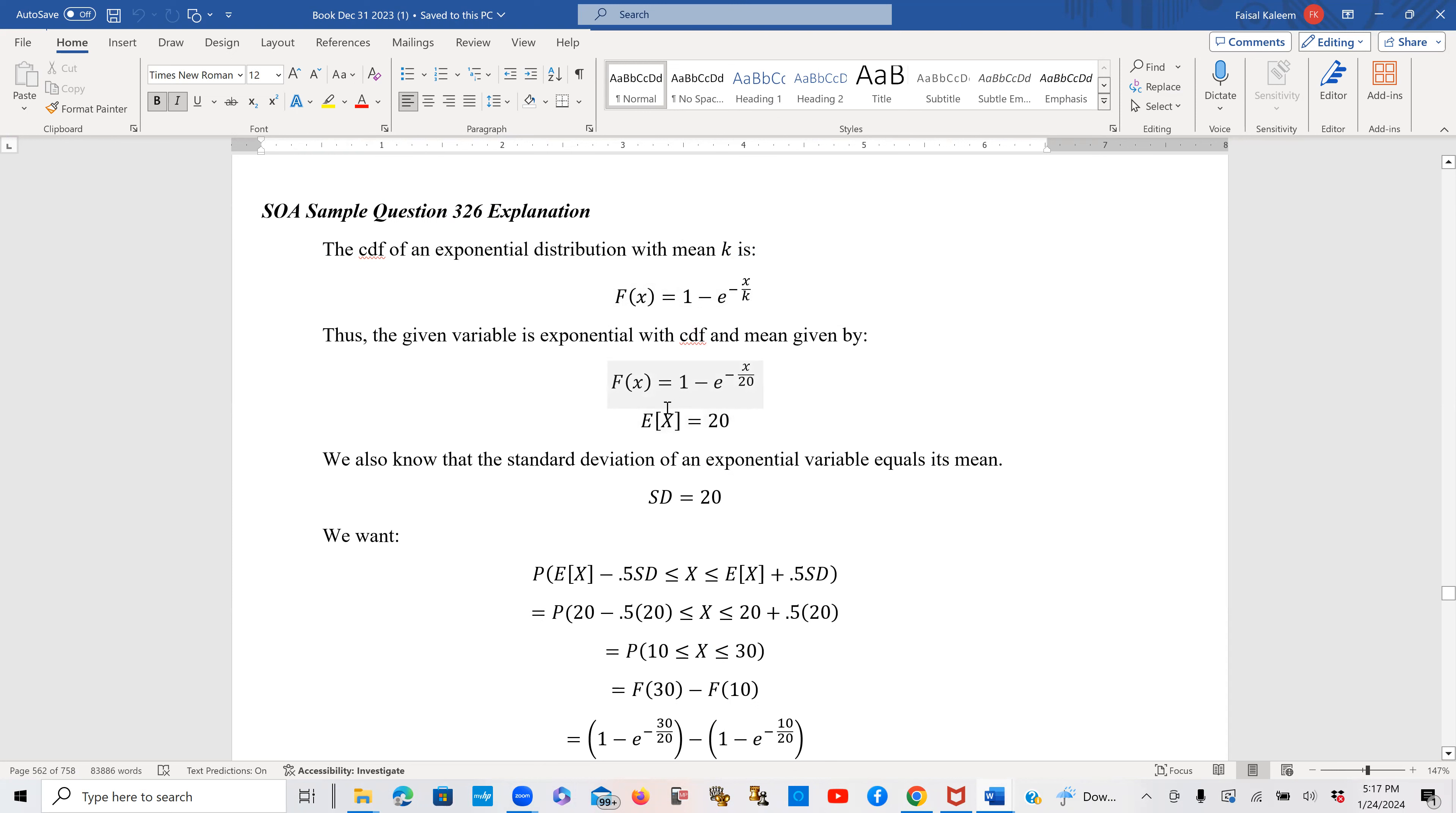Now we also know that the standard deviation of an exponential variable is equal to its mean. So standard deviation is also 20 and we want the probability that the x value is within 0.5 standard deviations of the mean.